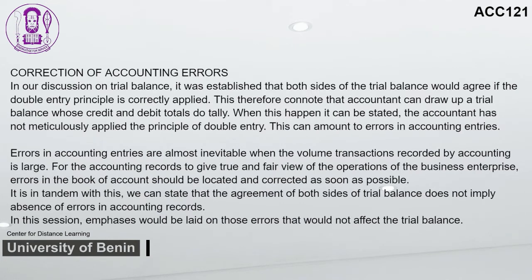Correction of Accounting Errors: Both sides of the trial balance agree if the double entry principle is correctly applied. When they don't agree, the accountant has not meticulously applied the principle of double entry, amounting to errors in accounting entries. Errors in accounting entries are almost inevitable when the volume of transactions is large. For accounting records to give a true and fair view, errors in the books of account should be located and corrected as soon as possible. The agreement of both sides of the trial balance does not imply the absence of errors in accounting records.